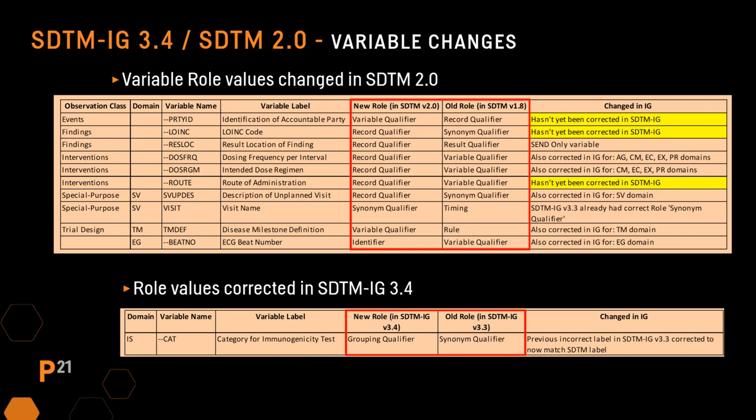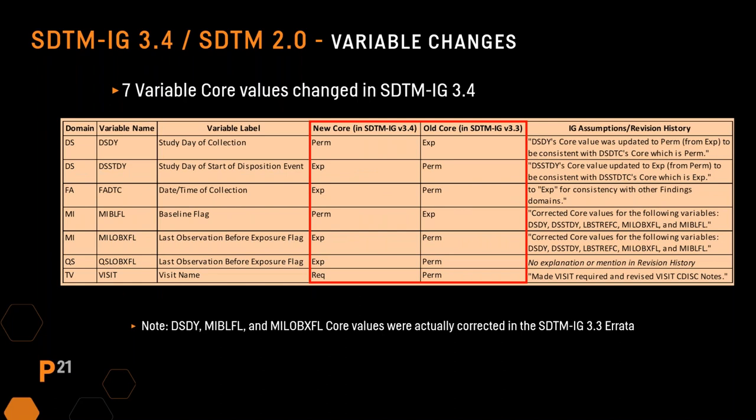There's also one variable, IS cat, where the role was corrected in SDTM IG 3.4. Variable core was changed for seven variables in the IG. Two variables, DS DY and MI baseline flag, were previously expected but are now permissible. Four variables — DS STDY, FADTC, and last observation before treatment flag in MI and QS — were previously permissible but now are expected. And one variable, visit in the TV domain, was previously permissible but is now required.